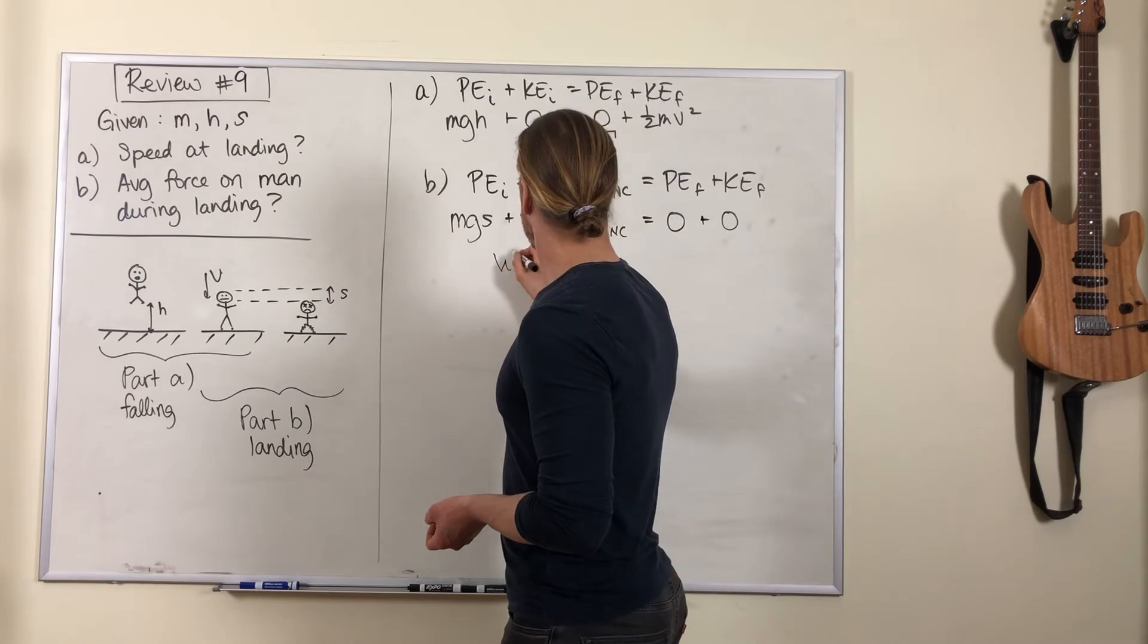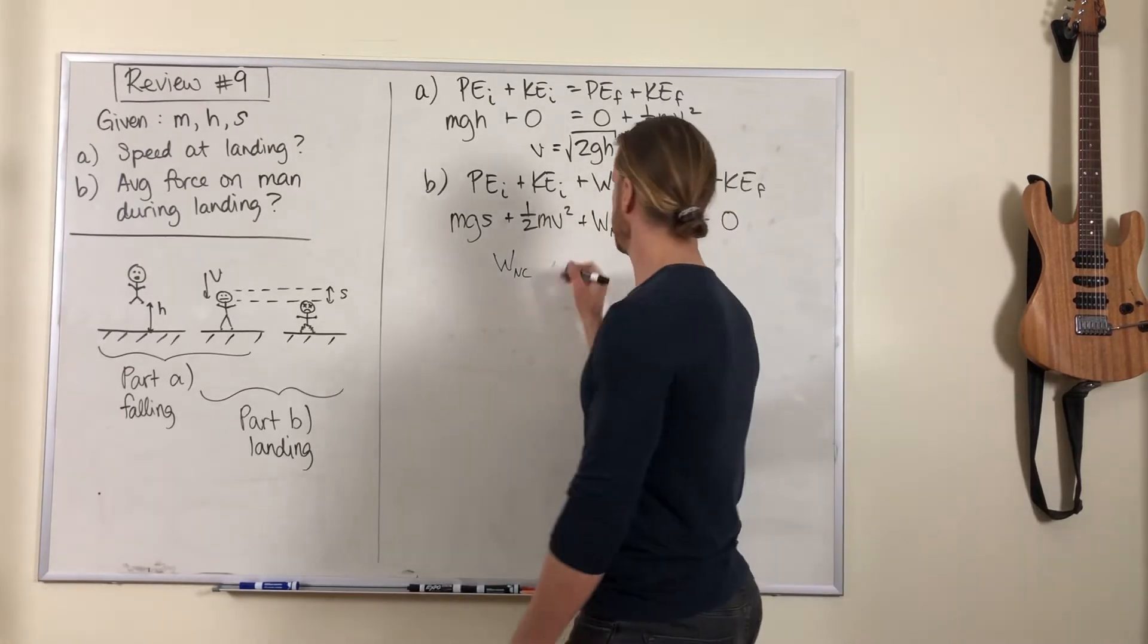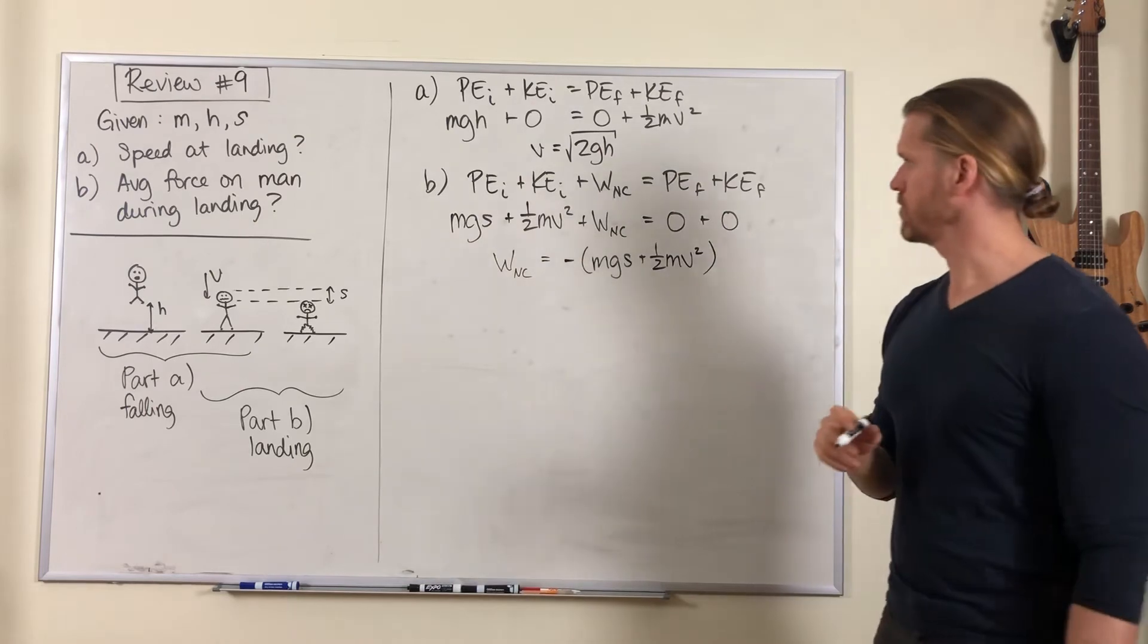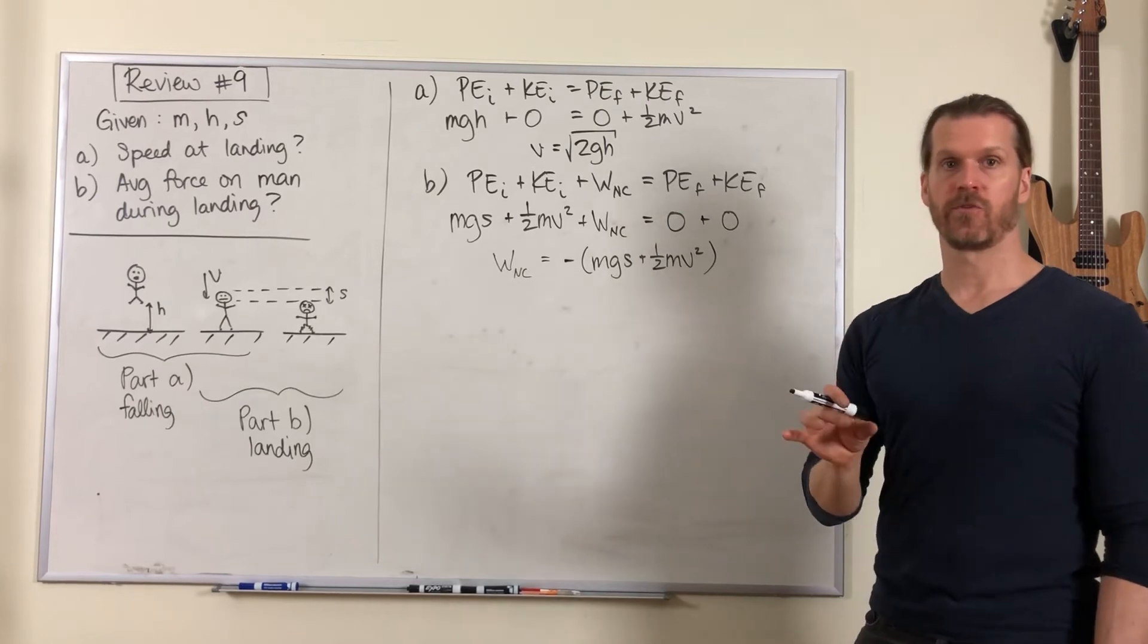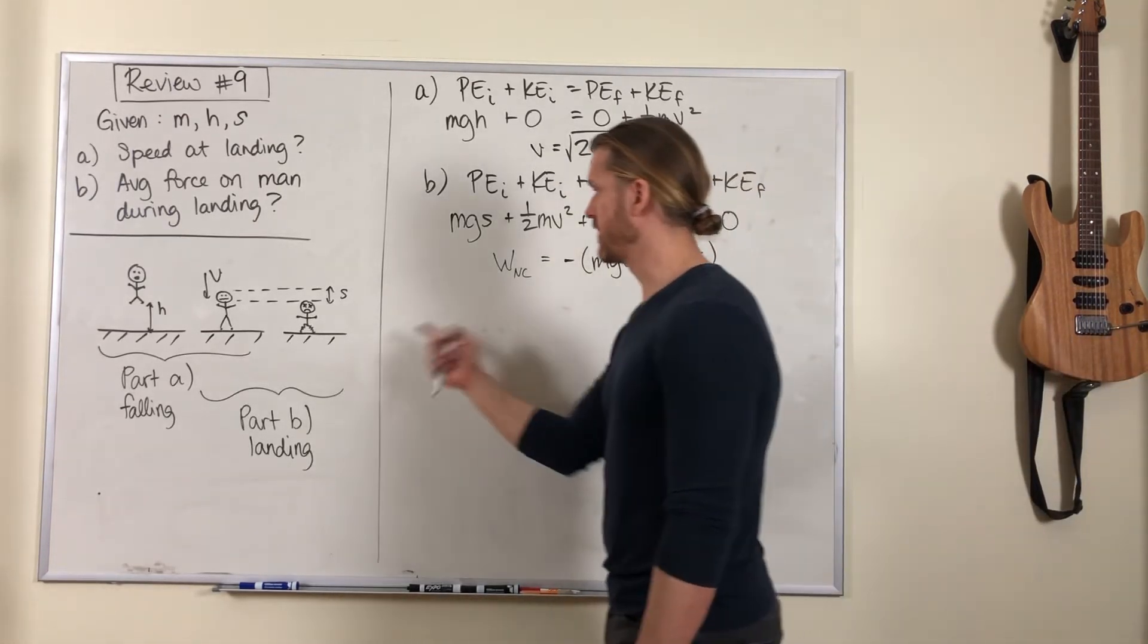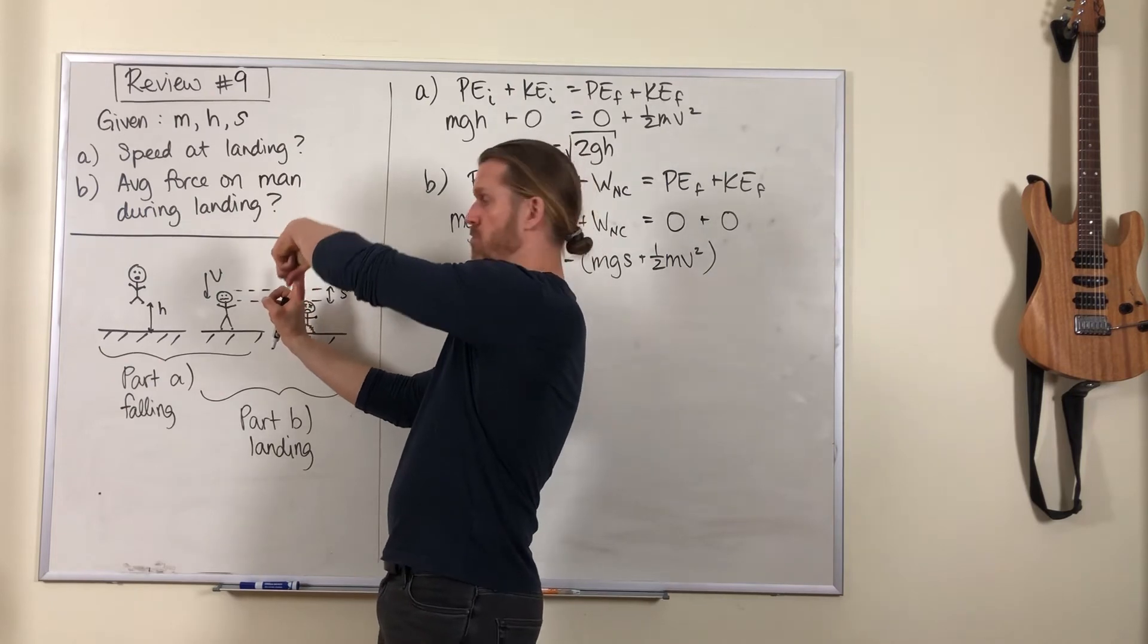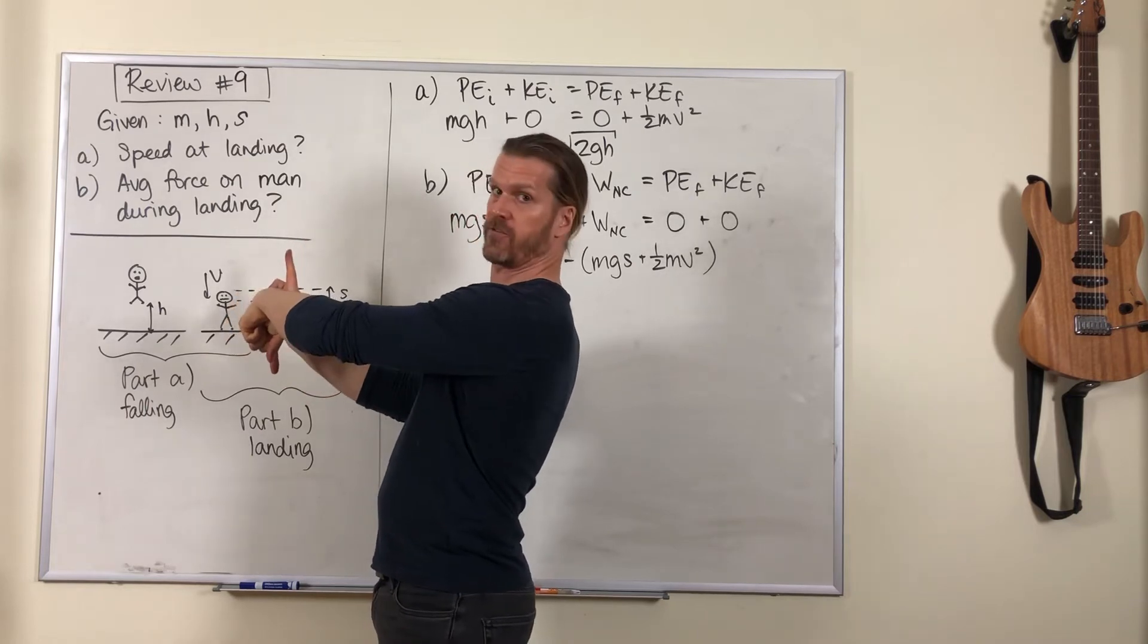We've got the work done by the non-conservative force of the ground pushing on this guy's feet and legs equals minus mgs plus one half mv squared. This work is force times displacement times cosine of the angle between those vectors. Let's think about what's happening during this landing process.